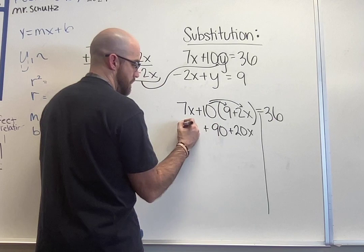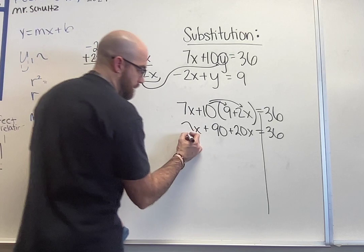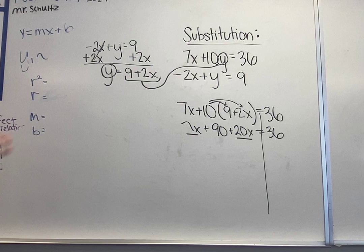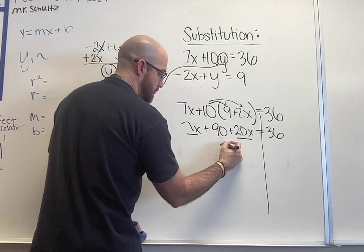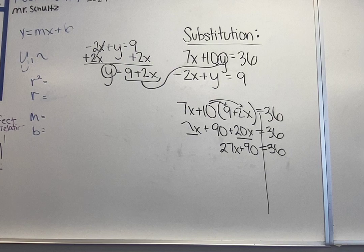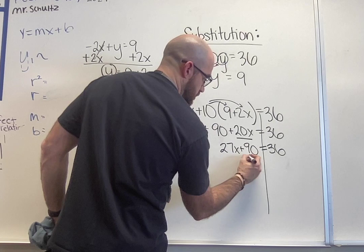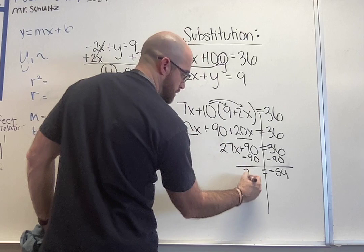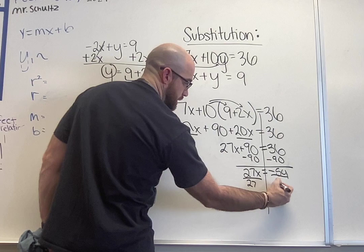At this point I'm going to combine my like terms. They're on the same side so I don't have to do any inverse or subtraction. I'm just going to do what it says. So positive 7 plus my 20 gives me 27x plus 90 equals 36. At this point I'm going to get that x by itself. I've got to subtract my 90 from 36 and I get negative 54. Here I have my 27x. Divide to get my x by itself so I get negative 2.